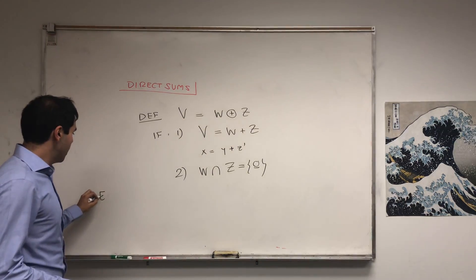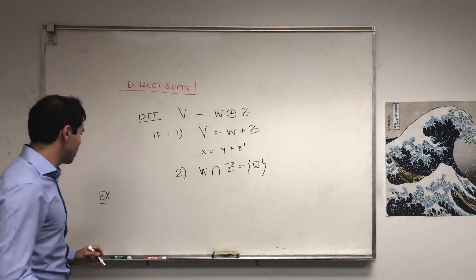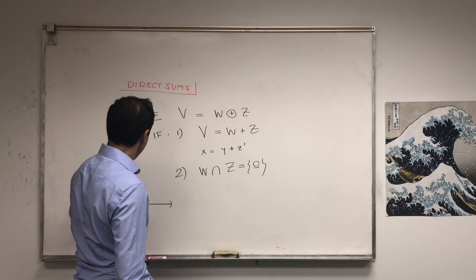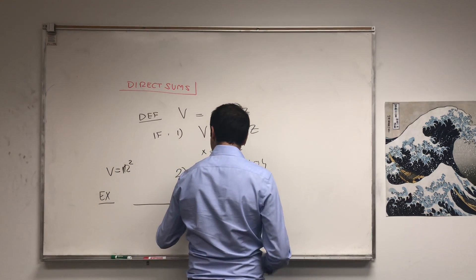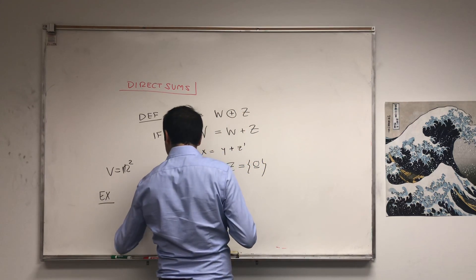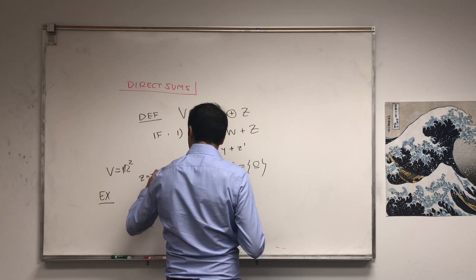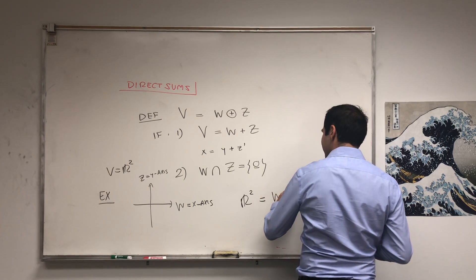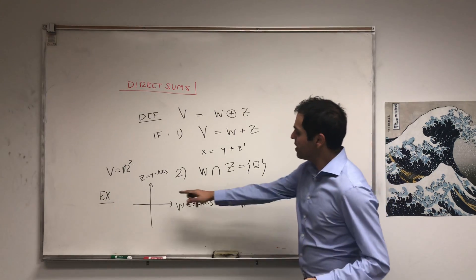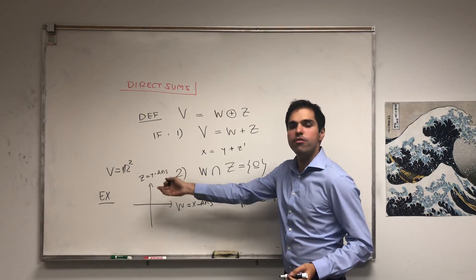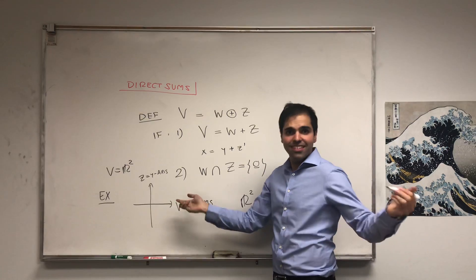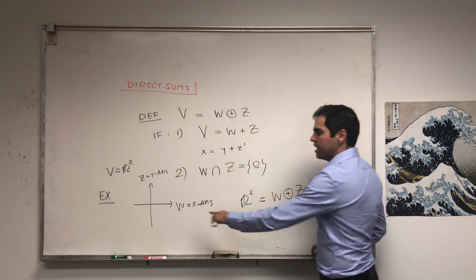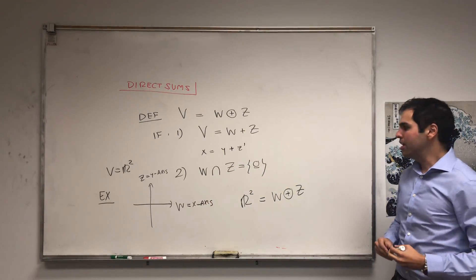Let me give you a quick example. Let V be R2, W be the x-axis, and Z be the y-axis. Indeed, you can check that R2 is the direct sum of W and Z, because any element in R2 can be written as a sum of an element in the x-axis (the x-coordinate) and an element in the y-axis (the y-coordinate). Moreover, the intersection of those two axes is just the zero vector.